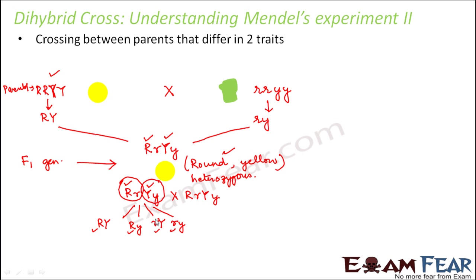Now, this was Mendel's experiment. But later on, scientists found out in some other experiments that there are some genes which are linked together and always remain together — they do not get segregated. That is a different story altogether which we will take up later. But for now, whatever Mendel's study was, they all segregated independently. Similarly, from the other F1 parent you could also get four gametes: capital R capital Y, capital R small y, small r capital Y, and small r small y. So these were the gametes which could be produced from the F1 generation.